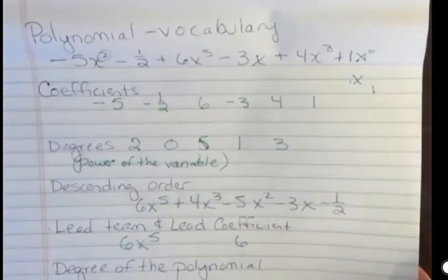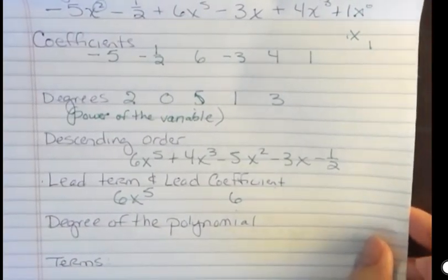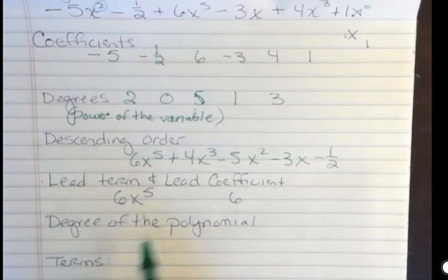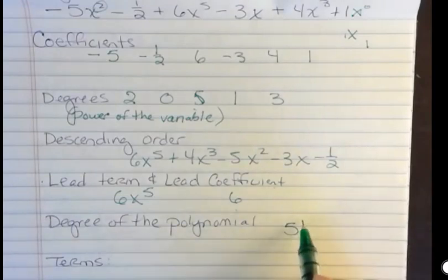The degree of the polynomial is the degree of the highest term or the lead term. The lead term determines the degree of the polynomial. So my degree of the polynomial is 5. It's a 5th degree. We would say it's a 5th degree polynomial.